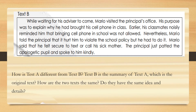Text B: While waiting for his advisor to come, Mario visited the principal's office. His purpose was to explain why he had brought his cell phone in class. Earlier, his classmates noisily reminded him that bringing a cell phone in school was not allowed. Nevertheless, Mario told the principal that it hurt him to violate the school policy, but he had to do it. Mario said that he felt secure to text or call his sick mother. The principal patted the apologetic pupil and spoke to him kindly.